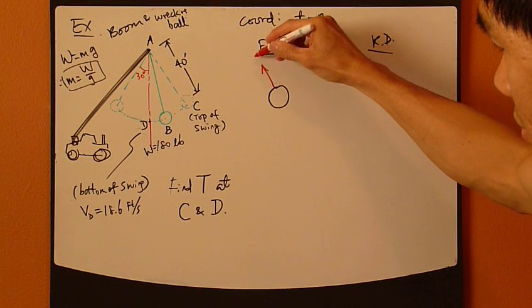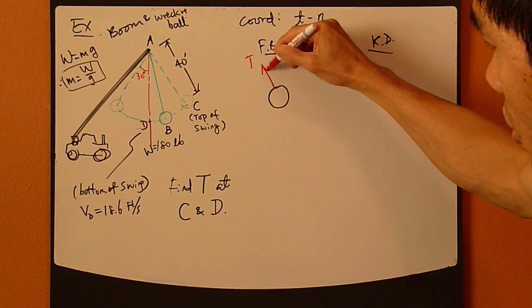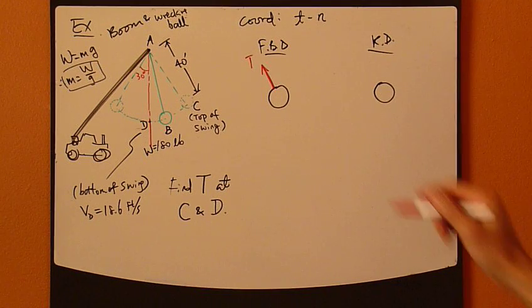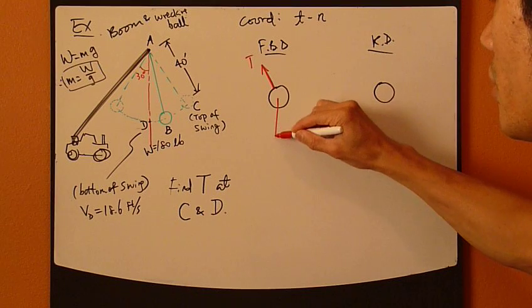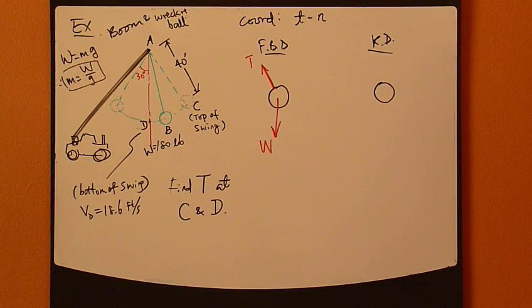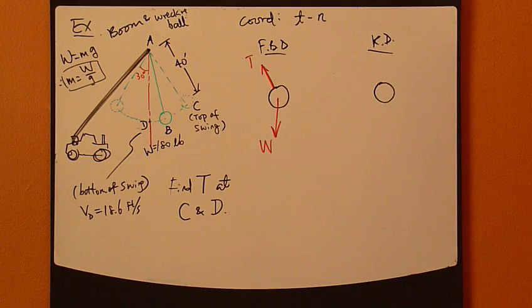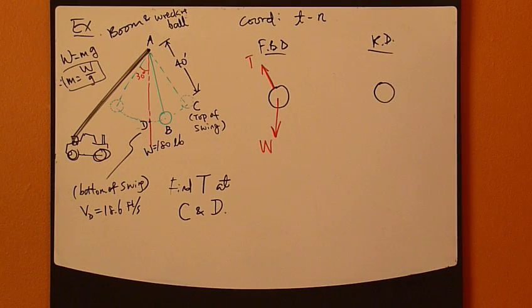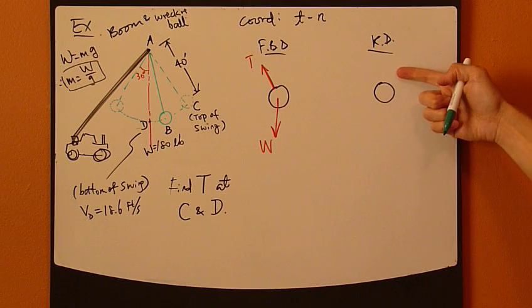But instead, I'm going to draw the forces acting on this ball. So what's going on inside this rope? Well, there is tension. Tension goes this way. And then also, obviously, we have weight, 180 pounds. And that's all. These are the only two external forces acting on this free body.